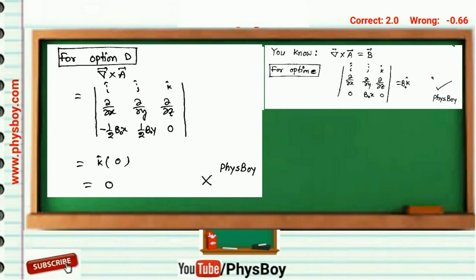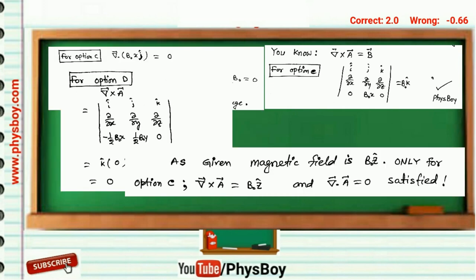If you calculate the curl of the vector potential given in option D, you will get curl equals zero, meaning the magnetic field is zero. But in the question, the magnetic field is B_zero k cap, so option C is the correct answer.